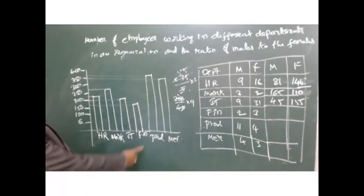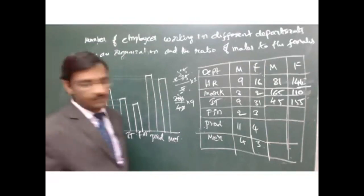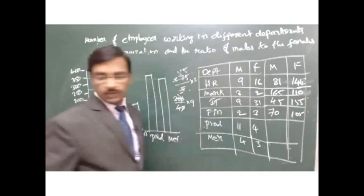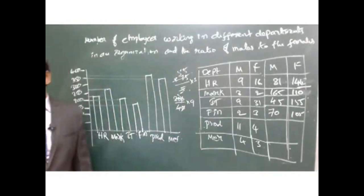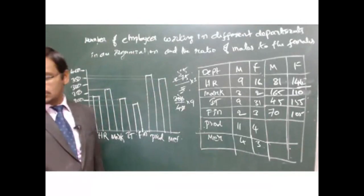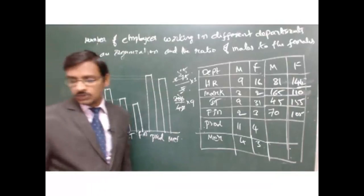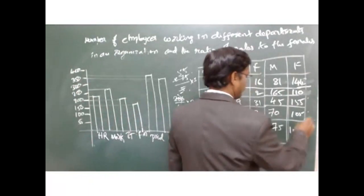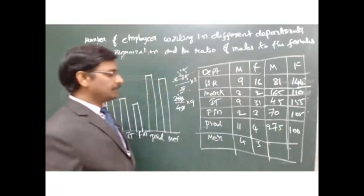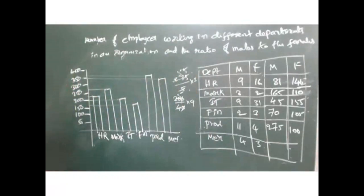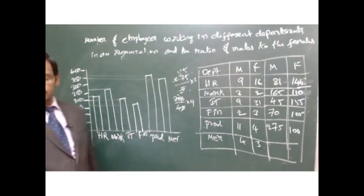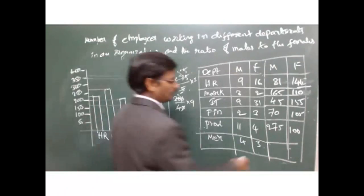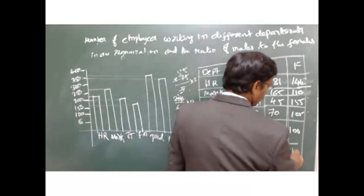Finance department gives 70 males and 105 females. Production department has 275 males and 100 females. Merchant department has a 4 is to 3 ratio with 350 total employees, giving 200 males and 150 females.